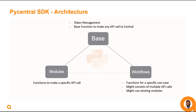Before we get started with actual code, let's explore PyCentral SDK's architecture. A class in object-oriented programming holds variables and functions which can be defined and called whenever required. In PyCentral SDK, we have a base class which all functions and modules depend upon. This base class holds all the input variables we provide to the SDK, and it has a generic function that can make any API call to Aruba Central's REST API Gateway.